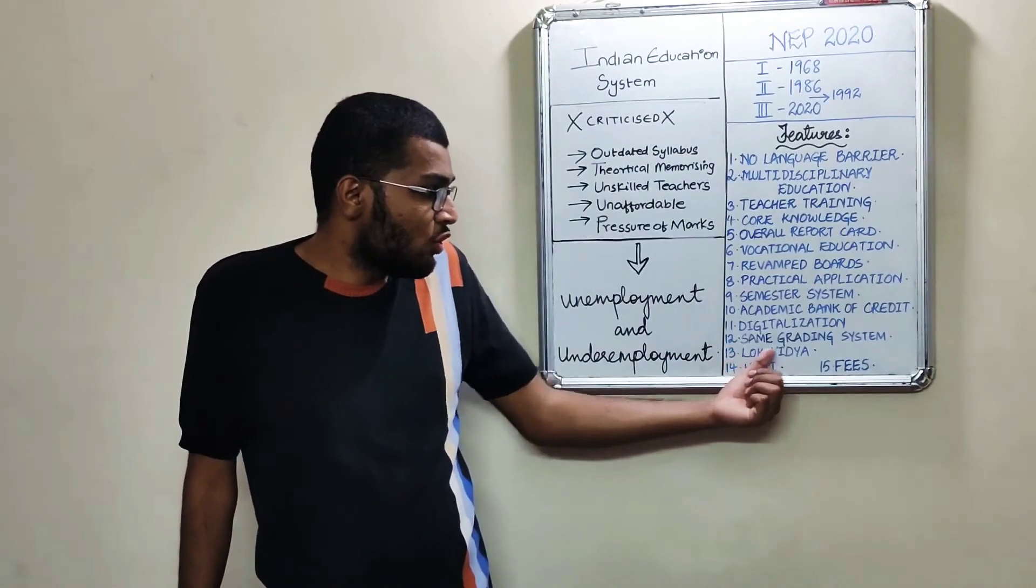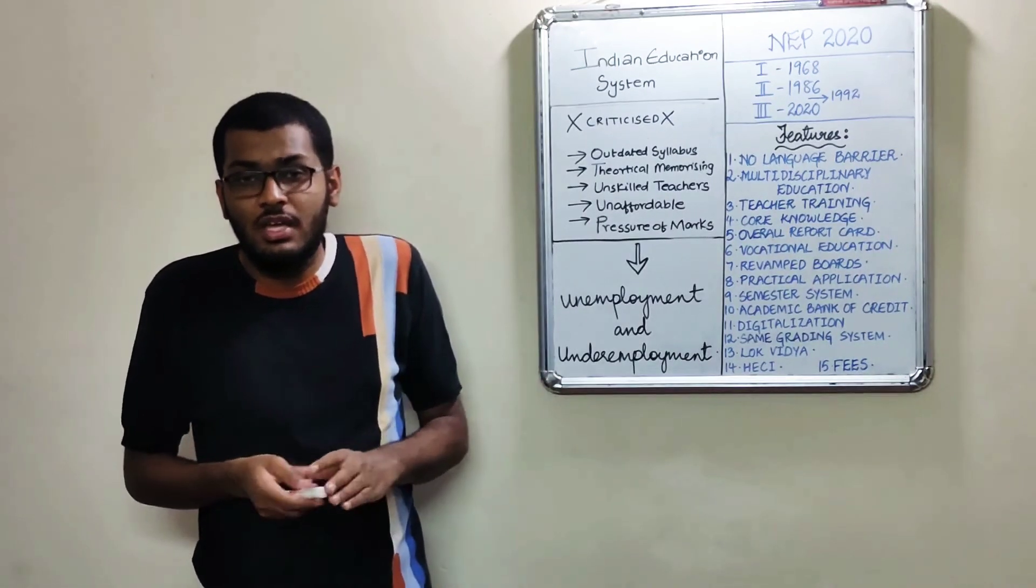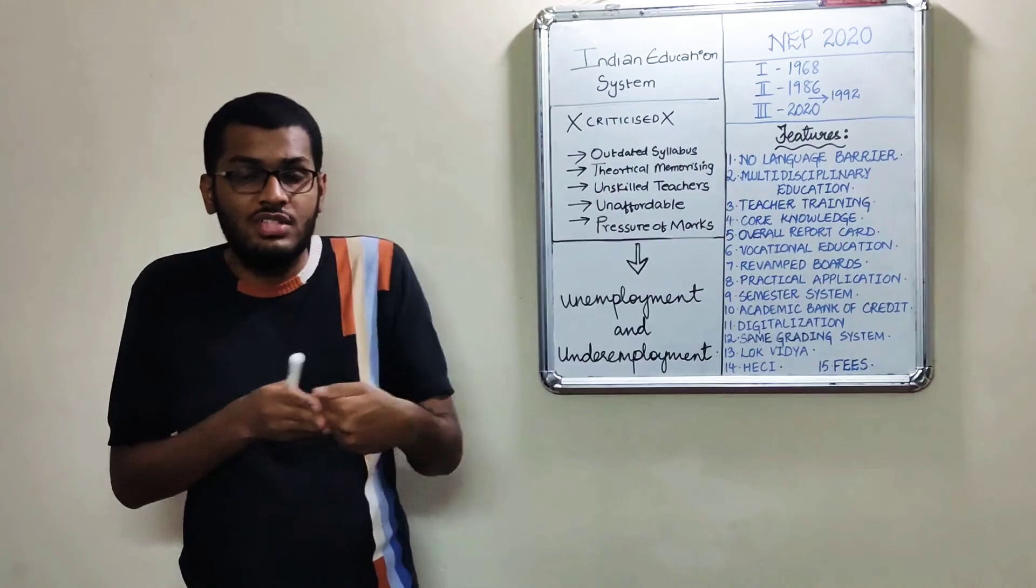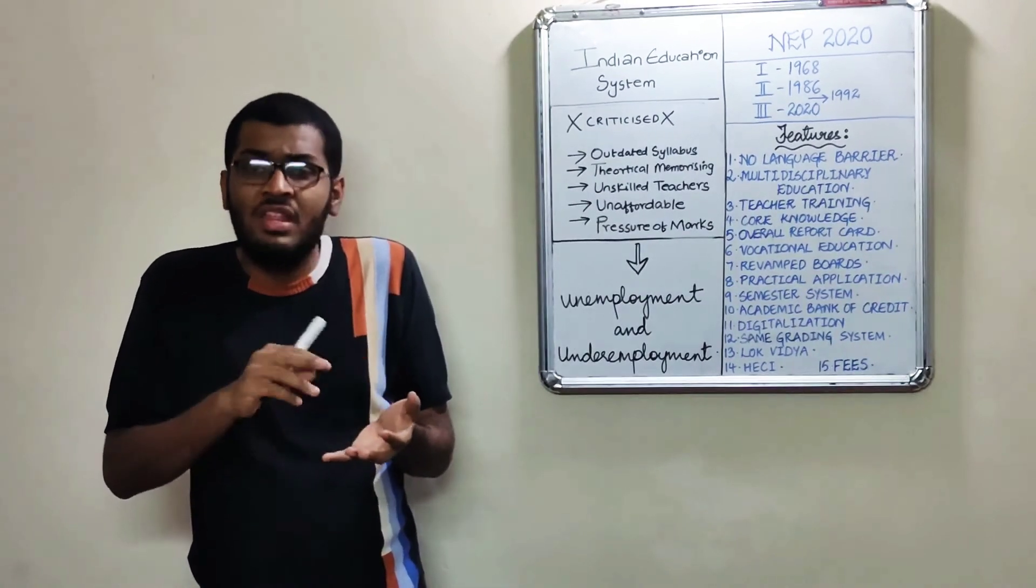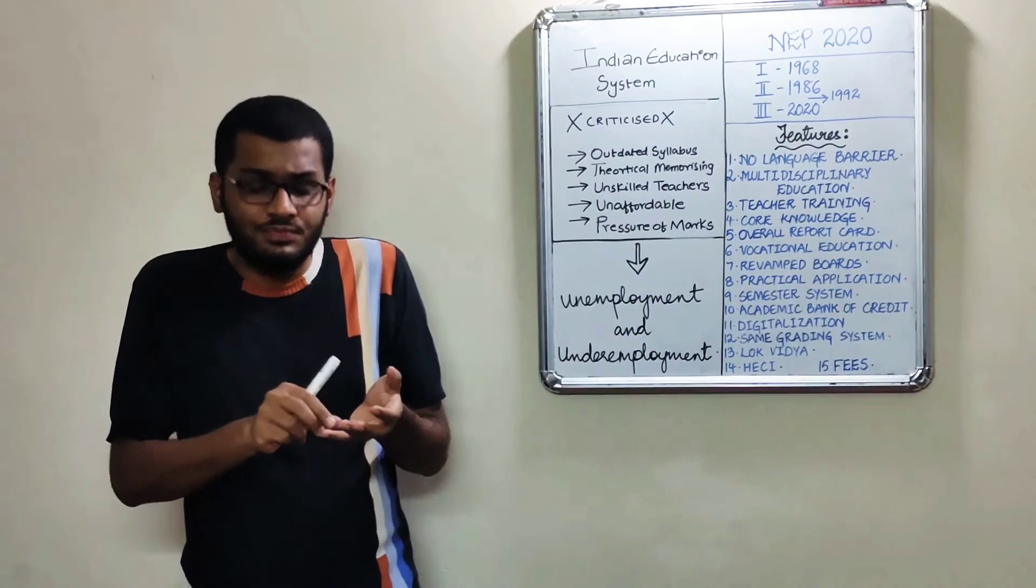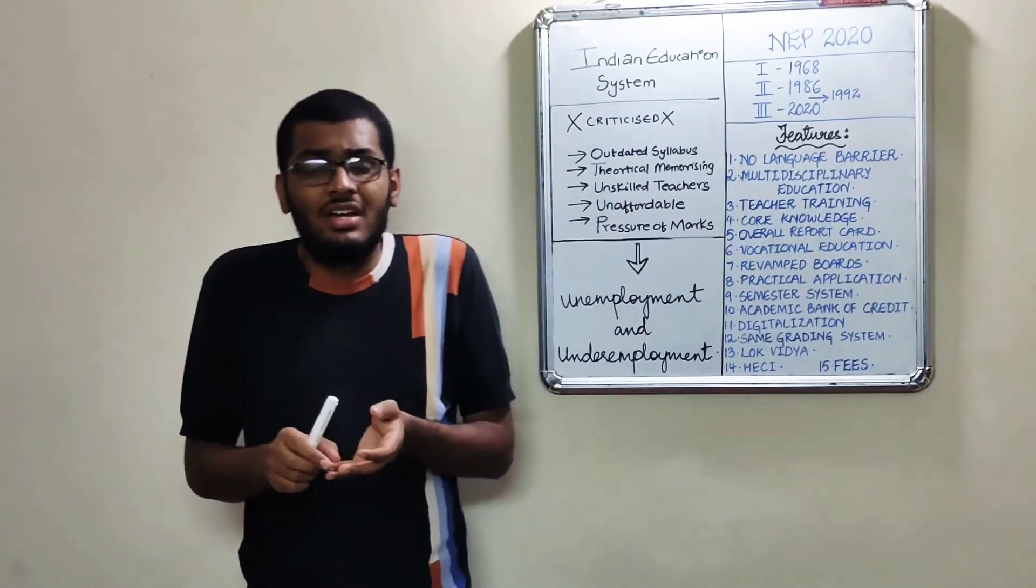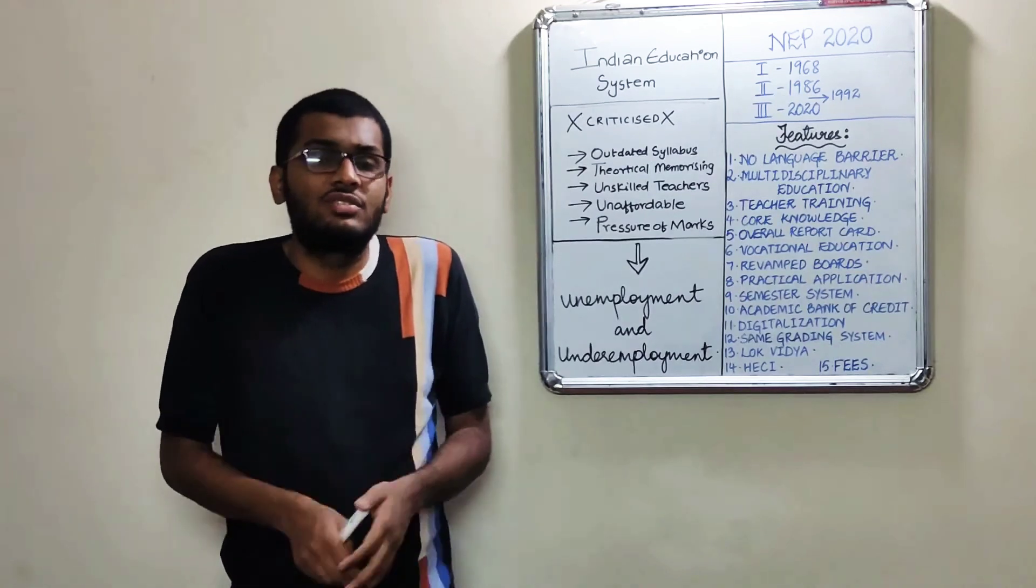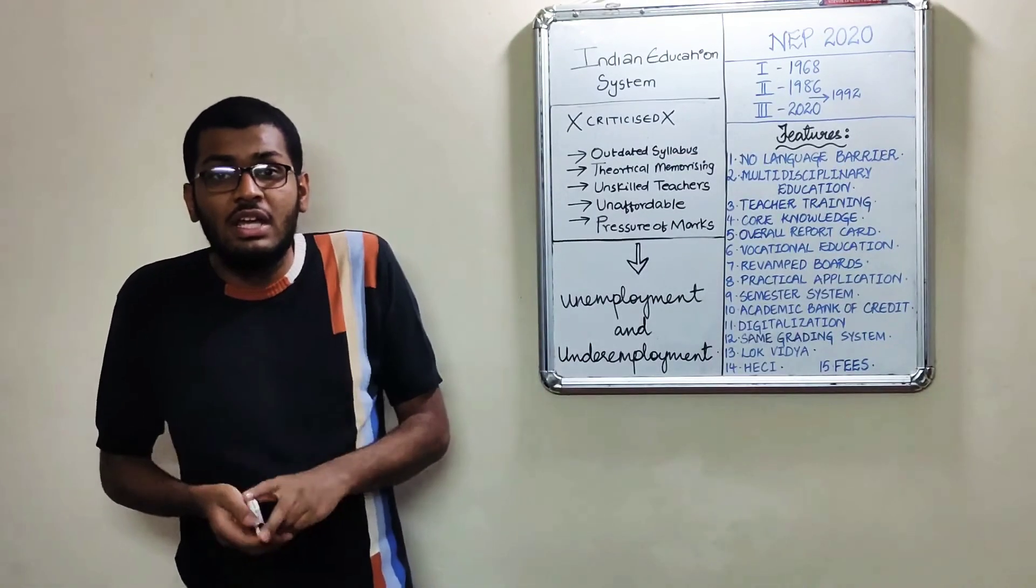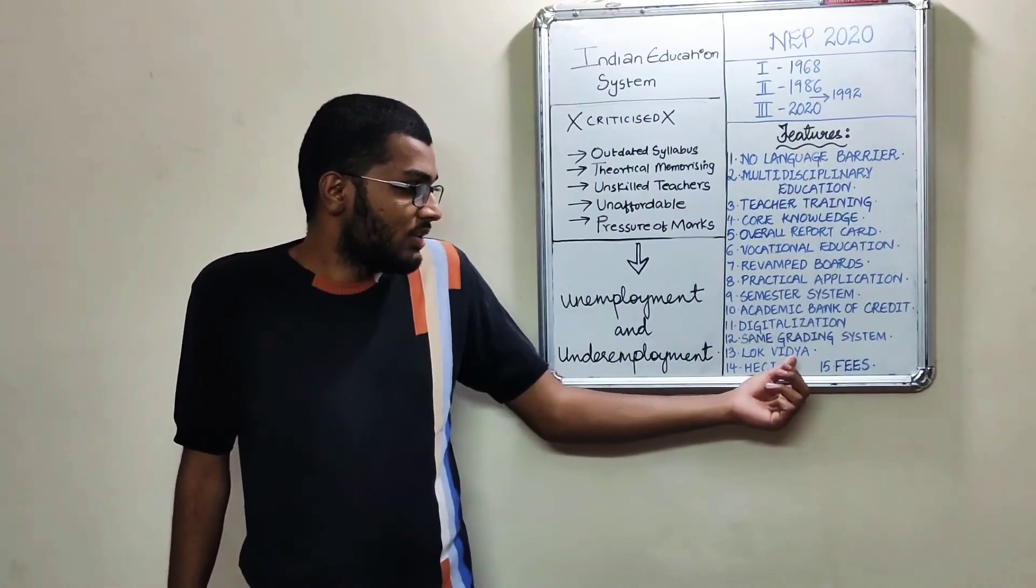Number thirteen is Lok Vidya. The concept they have built is to continue Indian heritage that has been built over years - handicrafts, different forms of Indian handicraft, handloom, pottery, agricultural techniques, fishery techniques. These things are to be continued to take Indian heritage forward. That is something they are focusing on.